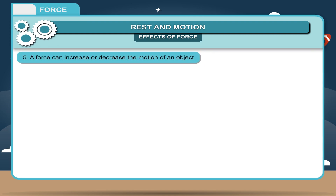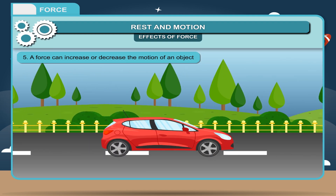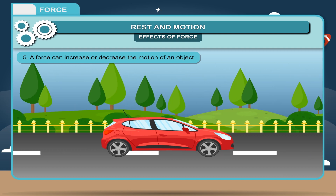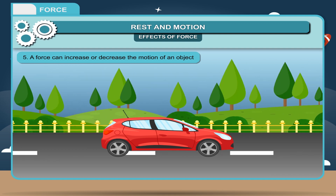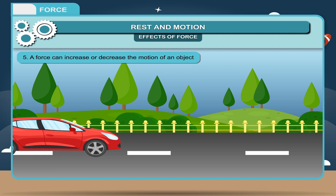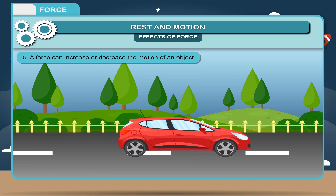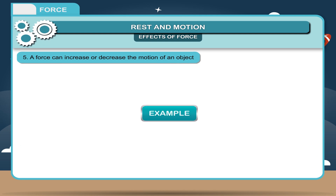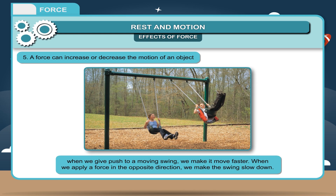A force can increase or decrease the motion of an object. When a force is applied on a moving body, it can bring about a change in the speed of the moving body depending upon the direction in which force is applied. For example, when we give a push to a moving swing, we make it move faster. When we apply a force in the opposite direction, we make the swing slow down.